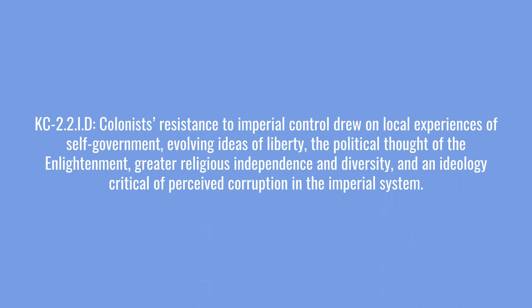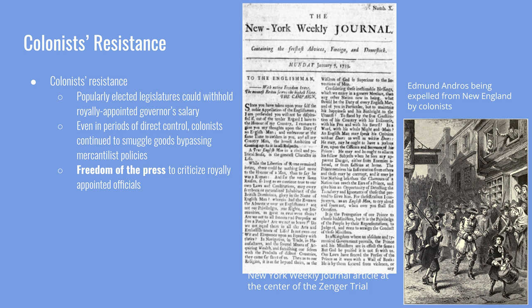The final key concept is that colonists' resistance to imperial control drew on local experience of self-government, evolving ideas of liberty, the political thought of the Enlightenment, greater religious independence and diversity, and an ideology critical of perceived corruption in the imperial system. Some resistance was carried out through popularly elected legislatures exercising checks and balances over royally appointed governors — like withholding their salary — showing that the colonies would not simply do whatever the English-appointed governors told them. Even in periods of direct control, colonists continued to smuggle goods against mercantilist policies, and the freedom of the press, as seen through the Zenger Trial, allowed newspapers like the New York Weekly Journal to freely criticize royal officials.